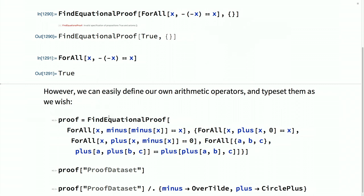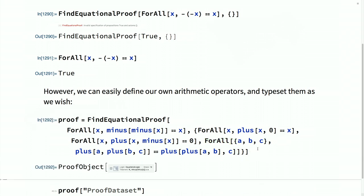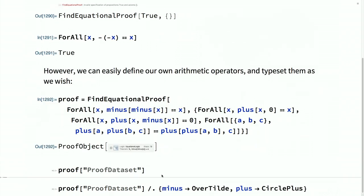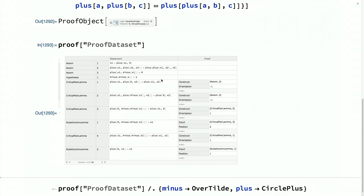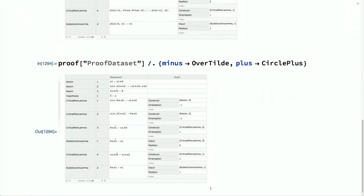You can easily prove such a theorem if you define your own axioms of arithmetic, or use ones built into AxiomaticTheory. Here I define axioms specifying the plus and minus operations, and we get back the proof object and a dataset. Because we've used our own operator choice it formats in a slightly ugly way with plus and minus operators, but we can always override those and use our own typesetting to format it more elegantly.